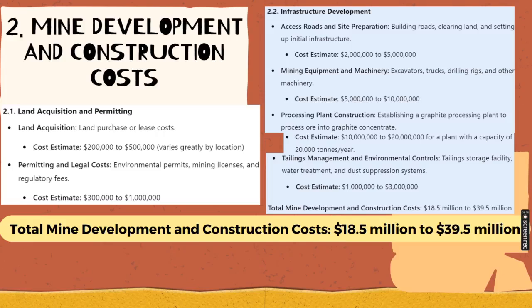The second major cost category is mine development and construction. Land acquisition and permitting costs around 500,000 to 2,000,000 US dollars, and permitting and legal costs are approximately 300,000 to 1,000,000 US dollars. Infrastructure development is estimated at 2,000,000 to 5,000,000 US dollars. Mining equipment and machinery is estimated at 5,000,000 to 10,000,000 US dollars.